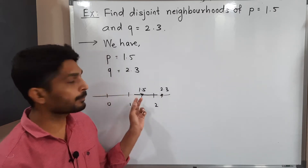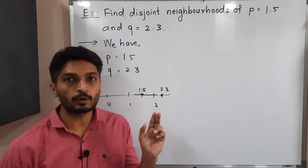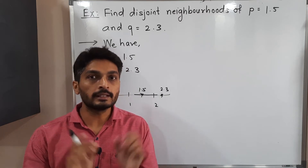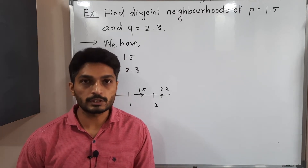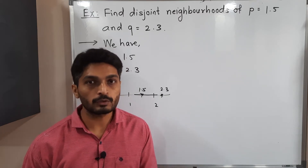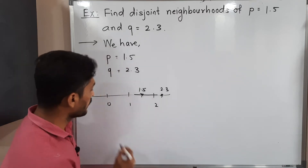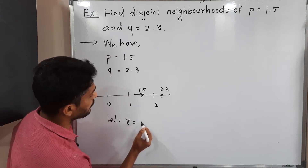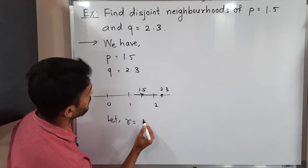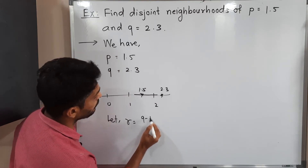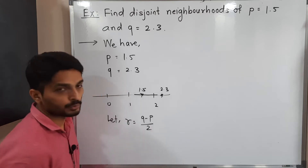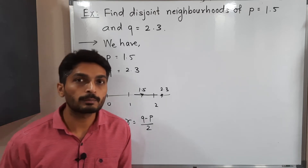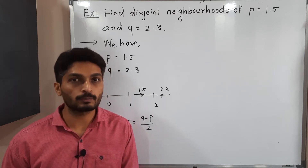We need to find neighborhood of 1.5 and neighborhood of 2.3 such that their intersection is empty. The technique we use is the same as in the proof of the Hausdorff property: let R = (Q minus P) divided by 2.